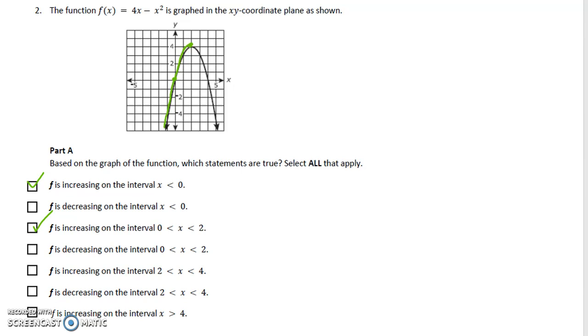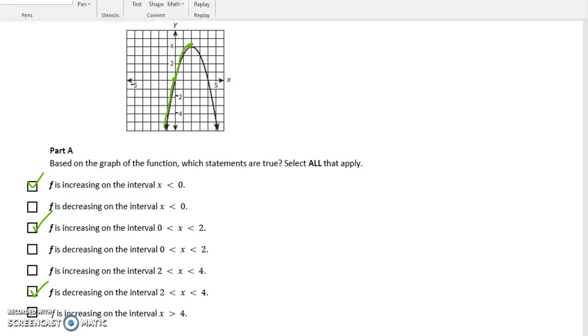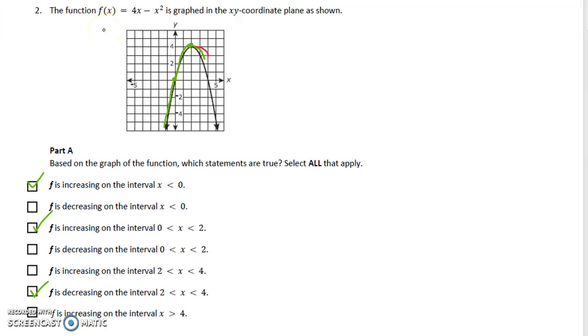Here's the ones that apply: f is increasing where x is less than 0, that is true. It is increasing still from 0 to 2, then it begins decreasing. So from 2 to 4 it's decreasing, and it's still decreasing after that.